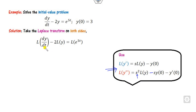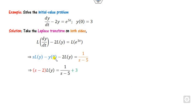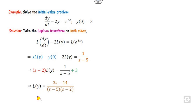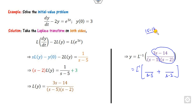Similarly you can write for y triple dash. Since this is the derivative form, we apply this formula. Now you substitute the value y(0) here. The value given is 3, so you substitute and rearrange. You can find the value of L(y) from here. The value of y is the L-inverse of this. You can take the partial fraction — this is nothing but (s minus 5) and (s minus 2). Substituting s equals 5, you get 1 by 3. Substituting s equals 2, you get 8 by 3.